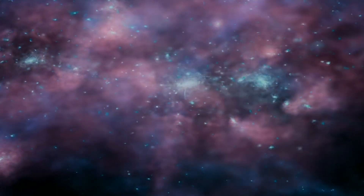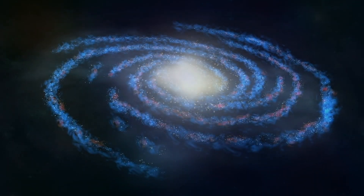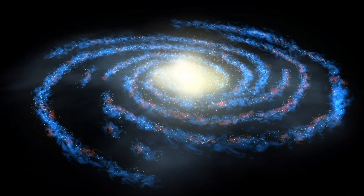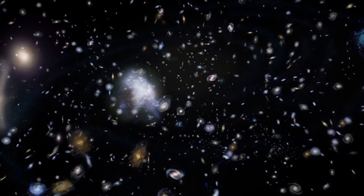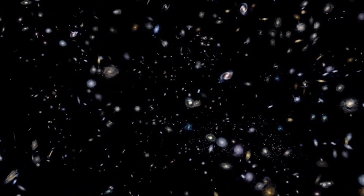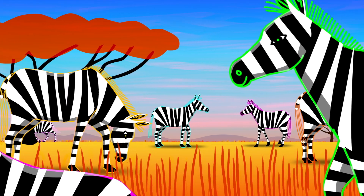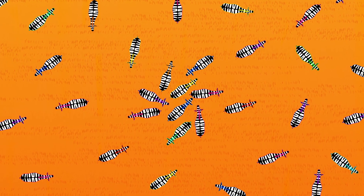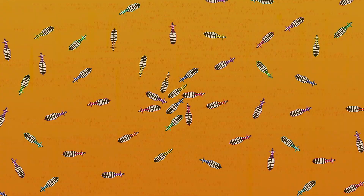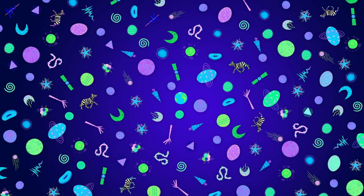Gravity acted as an amplifier for those inhomogeneities, causing them to collapse into stars, galaxies, and clusters, and leaving behind voids in between these celestial bodies. This is why on a small scale, we have pockets of matter — like a dazzle of zebras (and yes, that is what a group of zebras is called) — that appear denser than others. But our universe appears homogeneous or smooth on the largest distance scales.